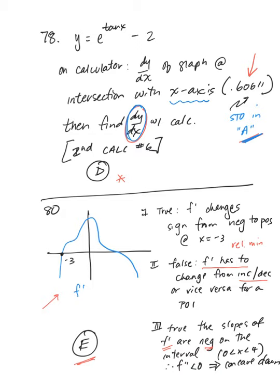In number 80, we're given a picture and trying to determine which of the three choices are true. Choice 1 says F has a relative minimum at negative 3 — that is true because F prime changes from negative to positive. Choice 2 says F has a point of inflection at x equals negative 2 — F prime must change from increasing to decreasing or vice versa, and we don't have that, so choice 2 is false. Choice 3 says F is concave down: slopes of F prime are indeed negative from 0 to 4, so F double prime is negative and concavity is down. Our choice is E.